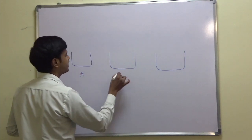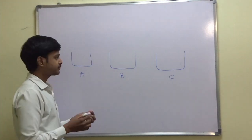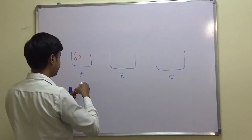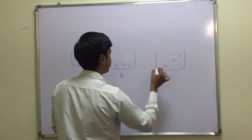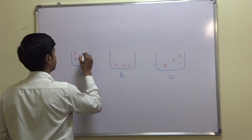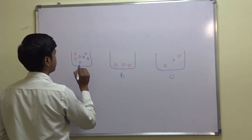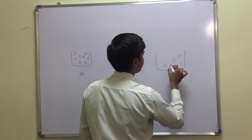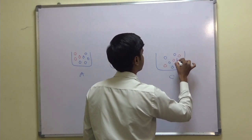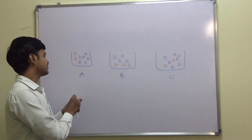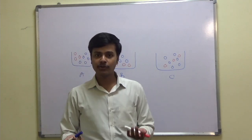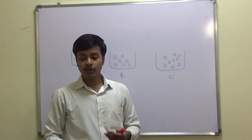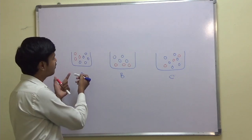Suppose we have bag A, bag B, and bag C. These are three bags and these bags contain some marbles — red marbles and blue marbles. Now you know how to find the probability of red marbles or blue marbles, and you can also find the probability of choosing a marble from bag A or B or C.